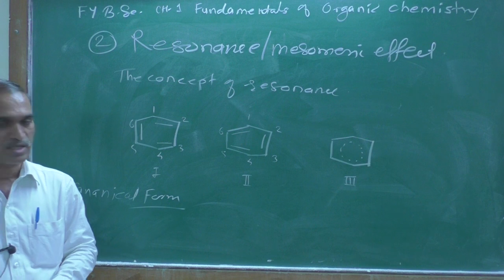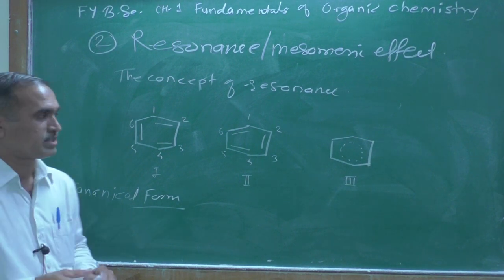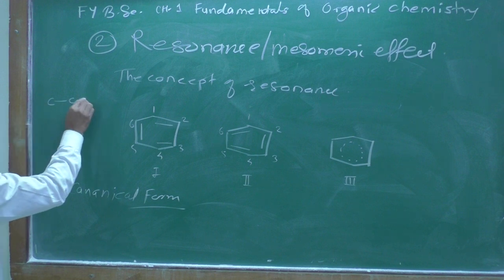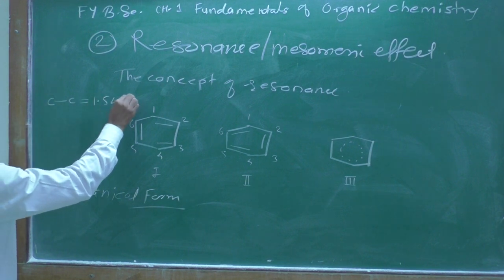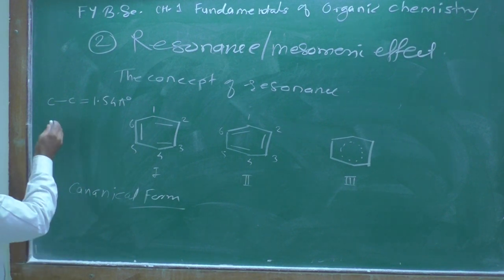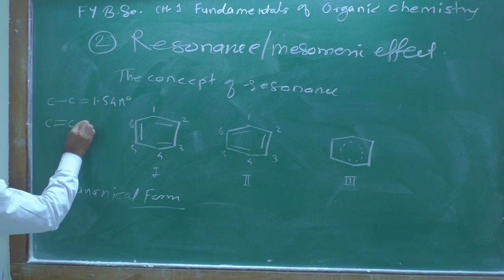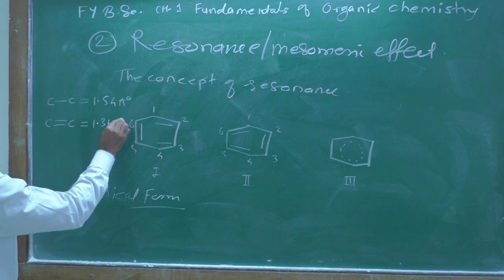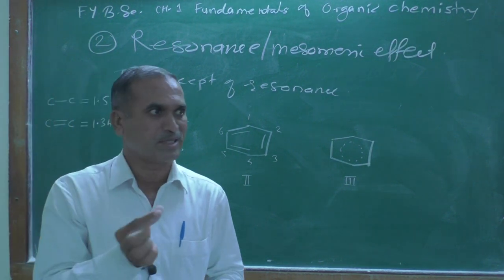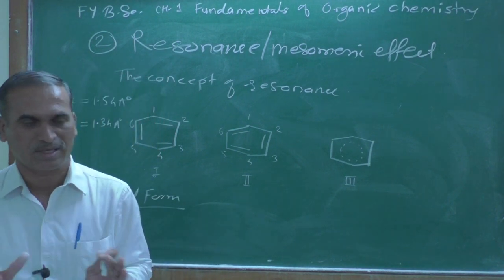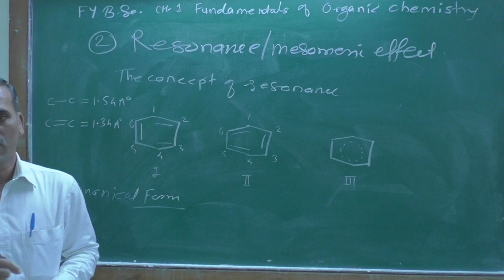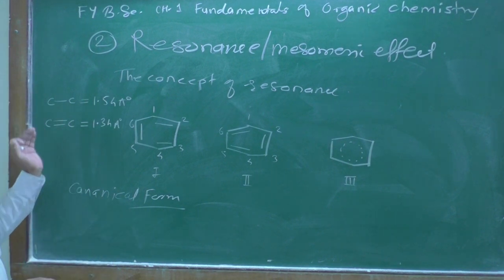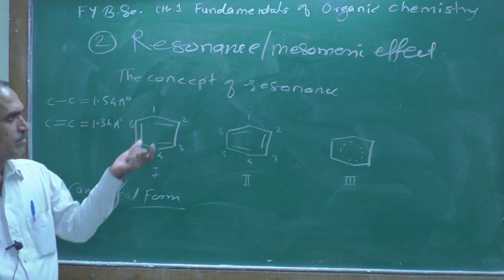In structure one there is a carbon-carbon double bond, while in structure two there are single bonds. Therefore these two structures are different and are called canonical forms or resonating structures. As we know, the carbon-carbon single bond has a bond length of 1.54 Å. The carbon-carbon double bond has a bond length of 1.34 Å, and the carbon-carbon triple bond has a bond length of 1.20 Å. Bond lengths are expressed in angstroms; one angstrom equals 10⁻⁸ cm.